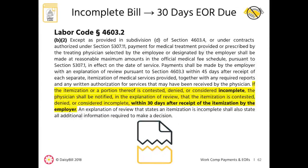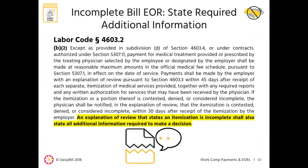An EOR is required within 30 days if the claims administrator denies either a portion or the entire bill. When the claims administrator believes a bill is incomplete, the EOR is due within 30 days of receipt of the original bill. For incomplete bills, California law requires the EOR to state all additional information required to adjudicate the bill for payment: an explanation of review that states an itemization is incomplete shall also state all the additional information required to make a decision.